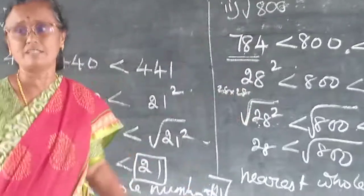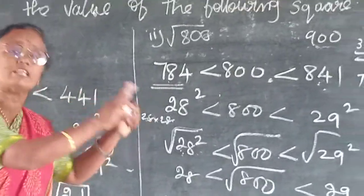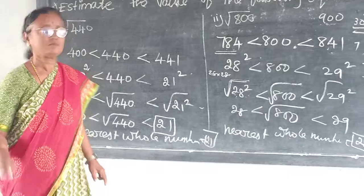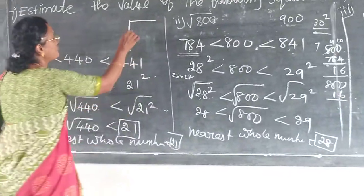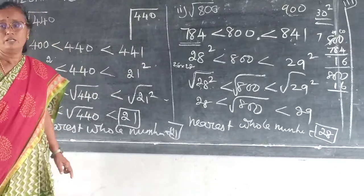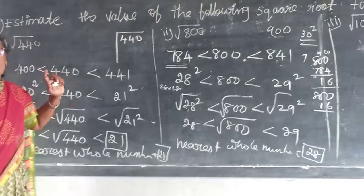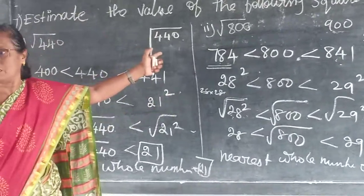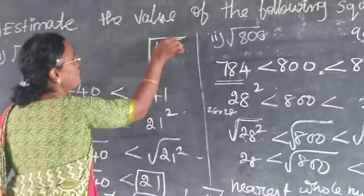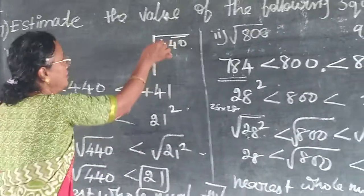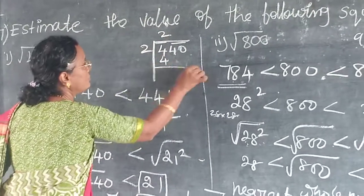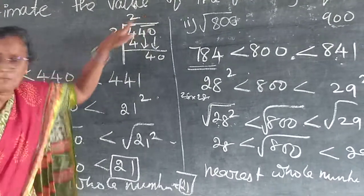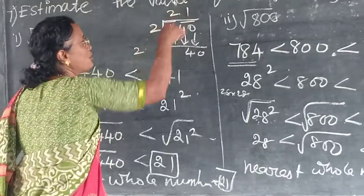With another method, you can confirm the answer. So, those who know to do this method, you can do it. Otherwise, there is an alternate method. Long division, do you know or not? Yes. This is 440. For verification. Otherwise, this method, if you prefer it, you can do it.